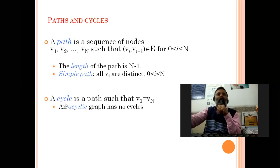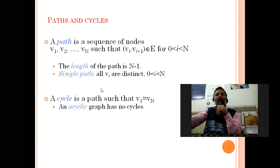A cycle is a path such that v1 equals vn — that is, if the first node and the last node in the path are the same, it creates a cycle. The source where we started our journey and the node where we terminated are the same. An acyclic graph is a graph that has no cycle.